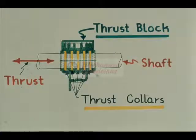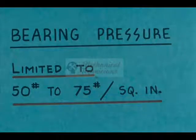In earlier times, axial shaft thrust was absorbed by a system of shaft collars turning with a thrust block, as shown in the graphic here. This thrust system served its purpose for many years, even though it had many limitations.